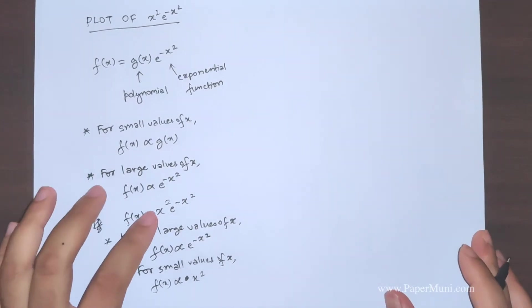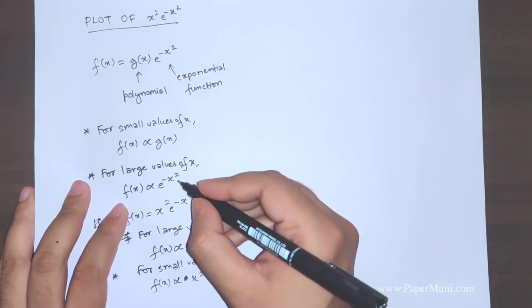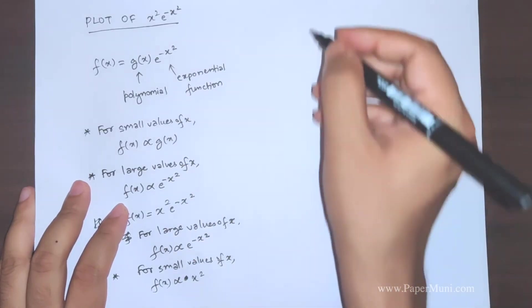Now we need to combine these two graphs of a plot for exponential minus x square and f(x) x square.